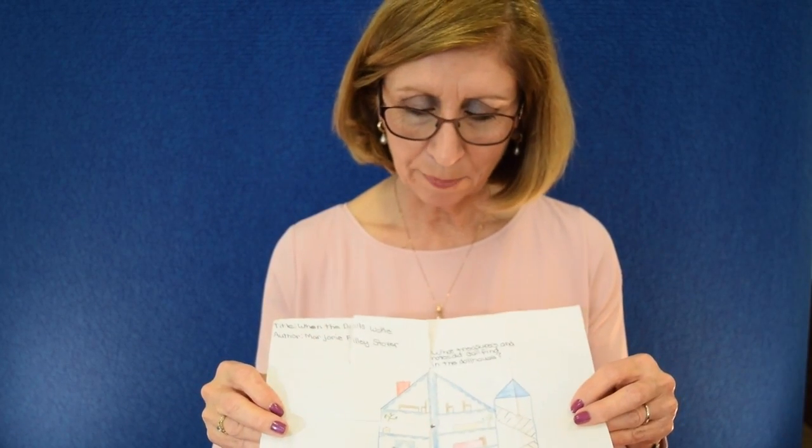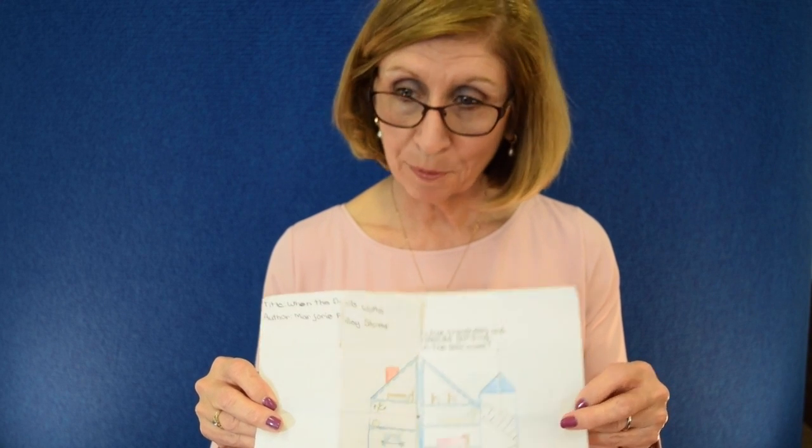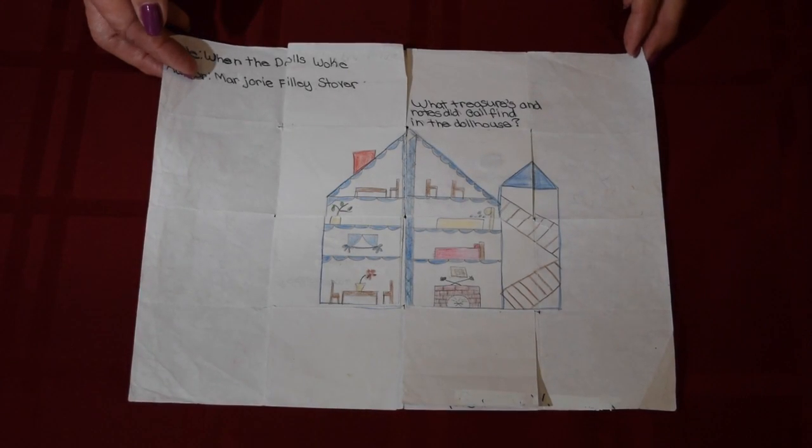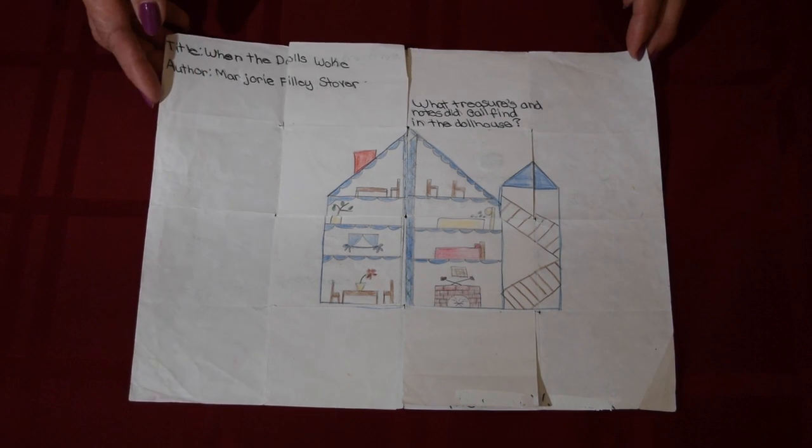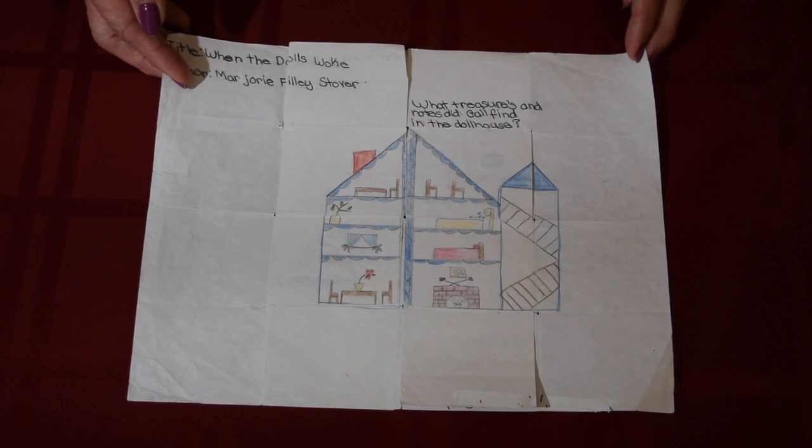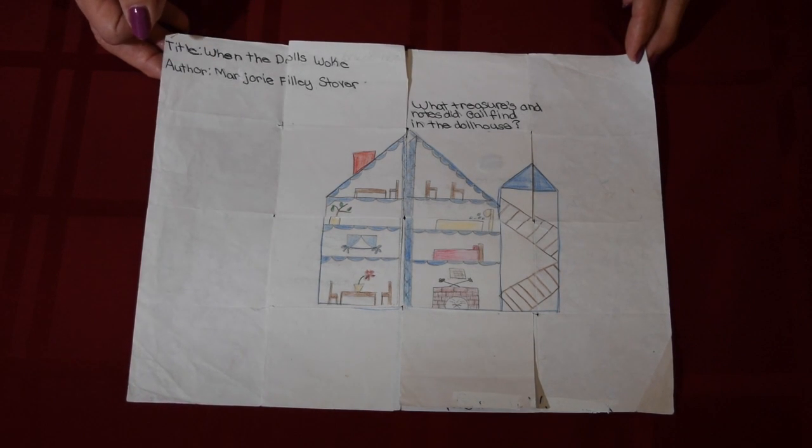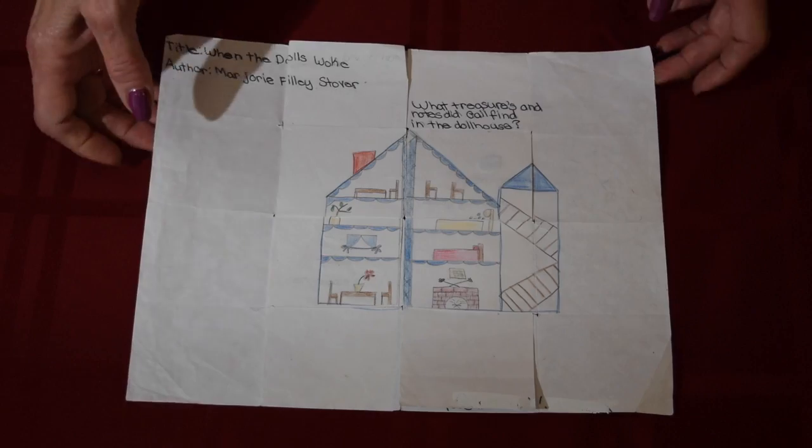So this is an example of a book report waffle weave. The student has posed a question: What treasures did Gail find in the dollhouse? We have a picture on the front, the title of the book and the author.